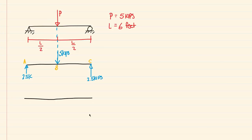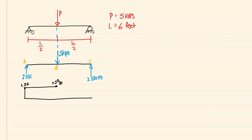Now I'll draw the shear diagram along the same line of length 6 feet. The easiest way to draw these shear diagrams for simple cases is to let the loads draw the shears for us. At the very left-hand side we have 2.5 kips being pushed up, so the shear jumps up to 2.5 kips. There are no other loads between points A and B, so this shear diagram is constant all the way to point B, still at 2.5 kips.